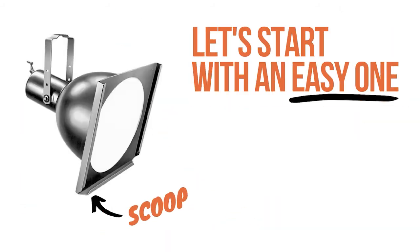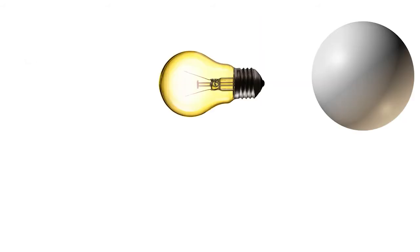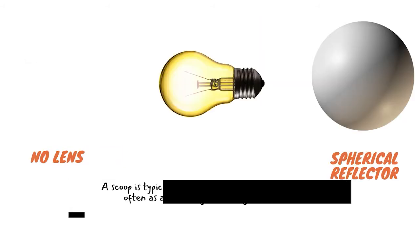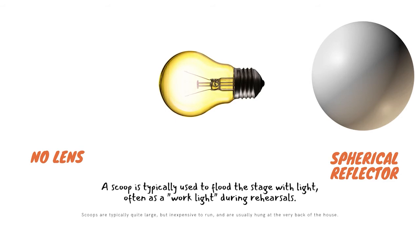Let's start with an easy one. This is a specific type of flood light known as a scoop. A scoop has a lamp, a spherical reflector at the back, and no lens in the front. A scoop is typically used to flood the stage with light, often as a work light during rehearsals. Scoops are typically quite large, but inexpensive to run and are usually hung at the very back of the house to fill the entire area with light.